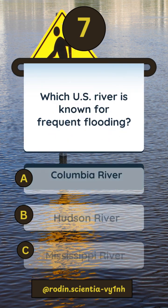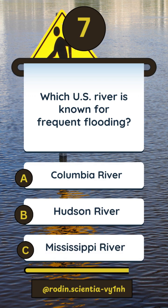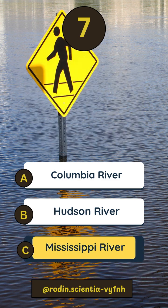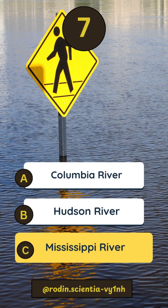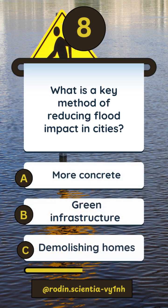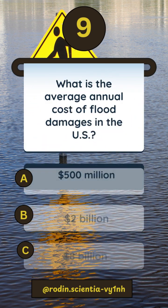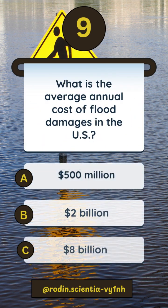Question 7: Which U.S. river is known for frequent flooding? Question 8: What is a key method of reducing flood impact in cities? Question 9: What is the average annual cost of flood damages in the U.S.?